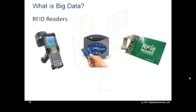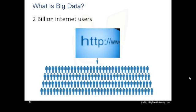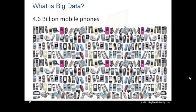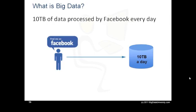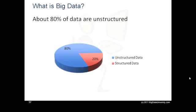So what is big data? With all the devices available today to collect data — such as RFID readers, microphones, cameras, sensors and so on — we are seeing an explosion in data being collected worldwide. Big data is a term used to describe large collections of data, also known as data sets, that may be unstructured and grow so large and quickly that it is difficult to manage with regular database or statistics tools. For example, there are more than 2 billion internet users in the world today, 4.6 billion mobile phones in 2011, 7 terabytes of data processed by Twitter every day, and 10 terabytes processed by Facebook every day. Approximately 80% of these data are unstructured.